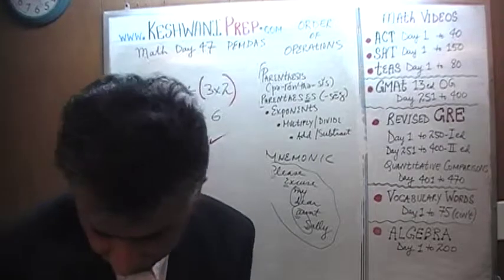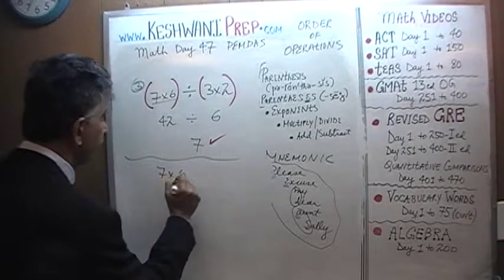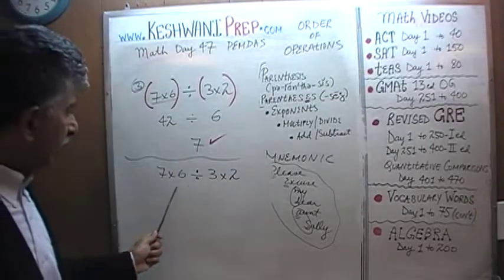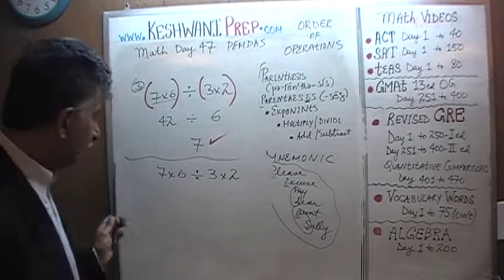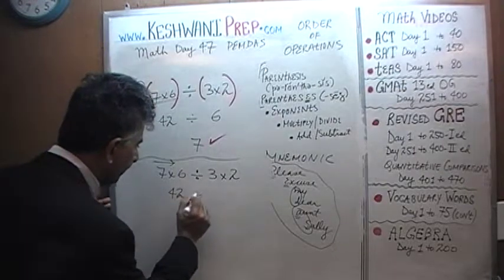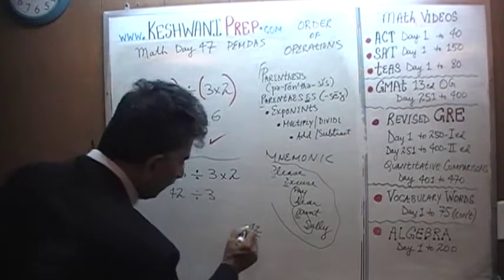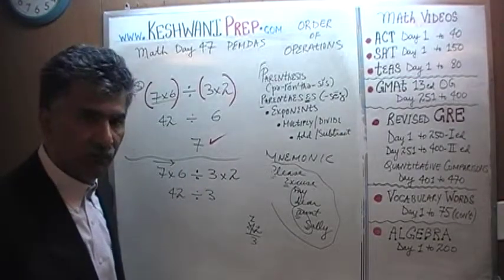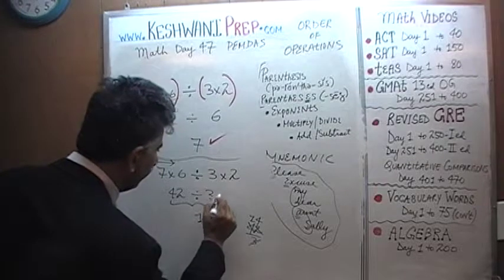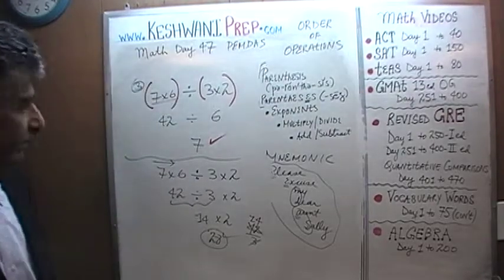So let's do the problem the way it is given. When you have multiplication and division together, go strictly from left to right. 7 times 6 is 42, then divide 42 by 3: how many 3's in 42? 4 has one 3, remaining 1 joins 2 to make 12, which has four 3's — so 42 divided by 3 is 14. Then 14 times 2 gives 28. The correct answer is 28, not 7.